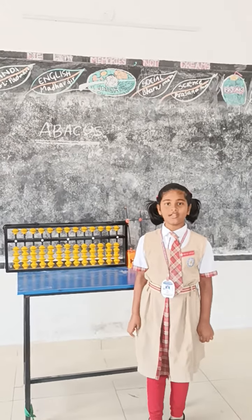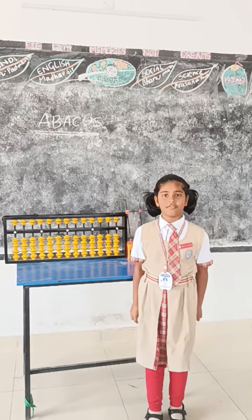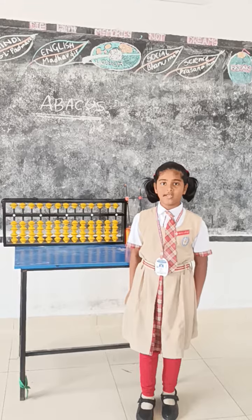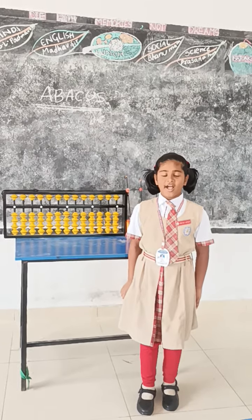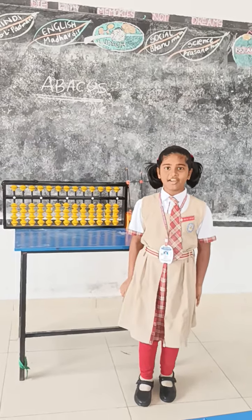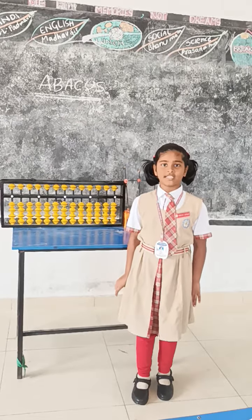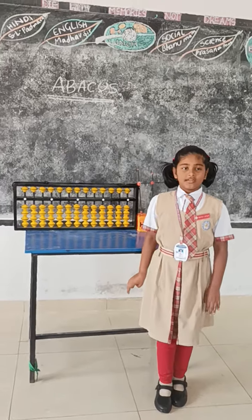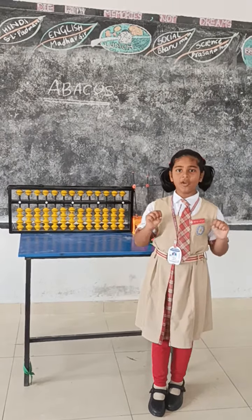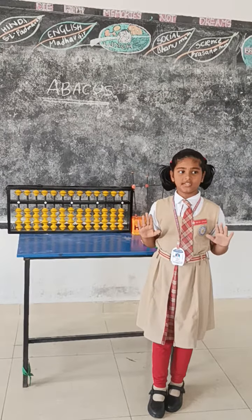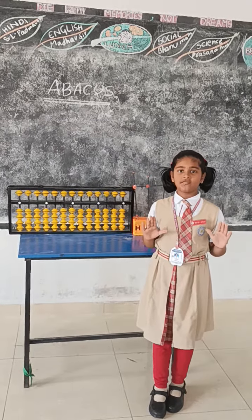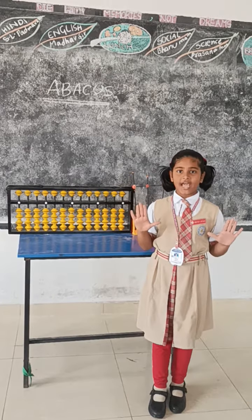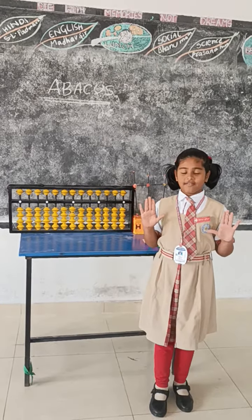Good morning all. This is Sahih Giyav from Bukhansko. Today my topic is about Abacus. Greeks invented the Abacus in the 15th century. In normal abacus we have only 10 numbers. In Abacus we have 99 numbers.